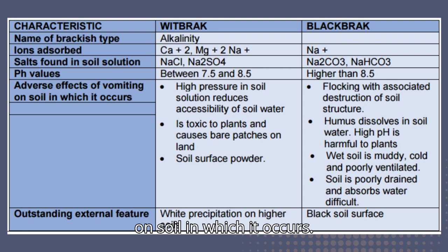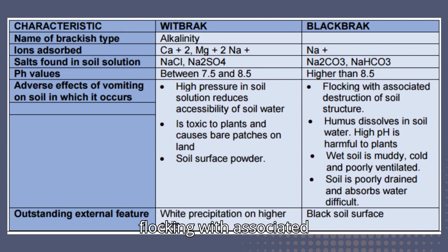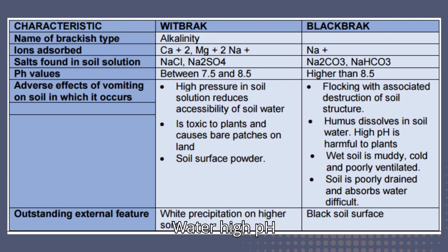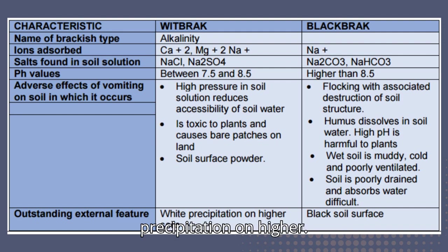Effects of alkalinity/salinity on soil: high osmotic pressure in the soil solution reduces accessibility of soil water. Salinity is toxic to plants and causes bare patches on land. Soil surface powder and flocking are associated with destruction of soil structure. Humus dissolves in soil water. High pH is harmful to plants. Wet soil is muddy, cold, and poorly ventilated. Soil is poorly drained, absorbs water with difficulty. White precipitation appears on higher soils and black soil surface on black brackish soil.